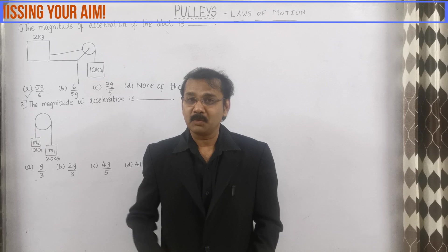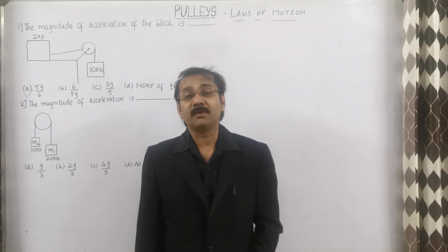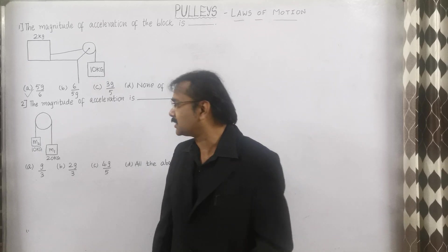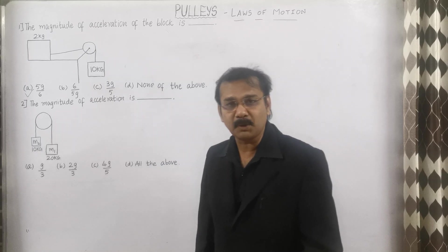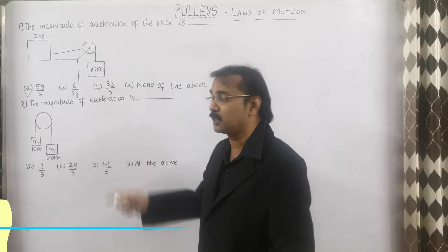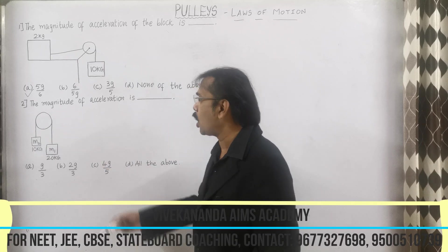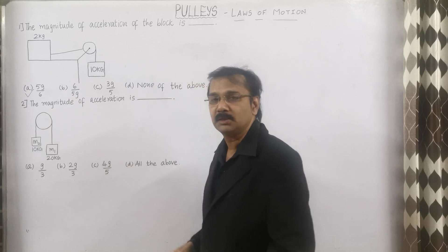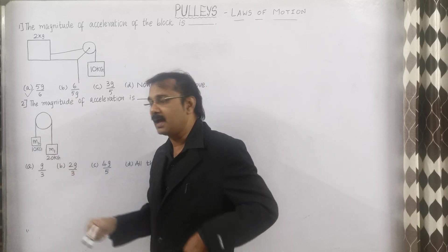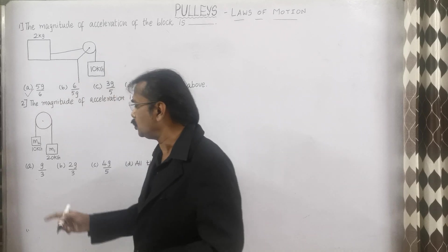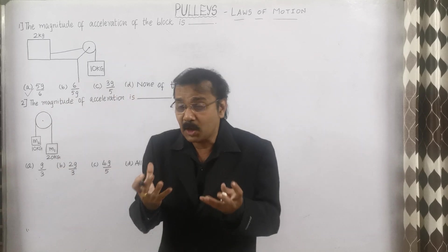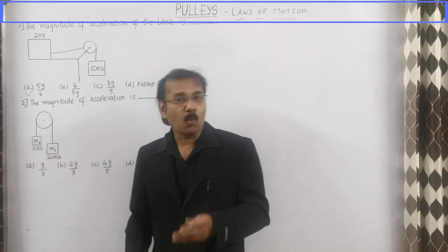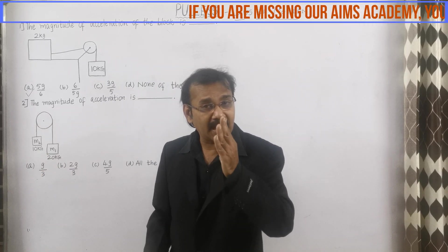Let us go on to the second question. Without using any concept and without using any formula, we are going to do this sum in a fraction of seconds. The second question is in the chapter of Laws of Motion, especially the topic of pulleys. The question asks for the magnitude of acceleration. There is a pulley with 2 masses hanging down — one is 20 kg and the other one is 10 kg, with one mass higher than the other.